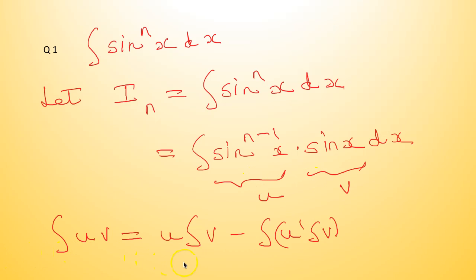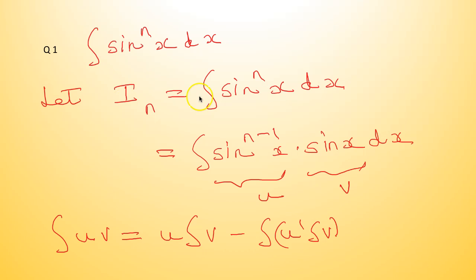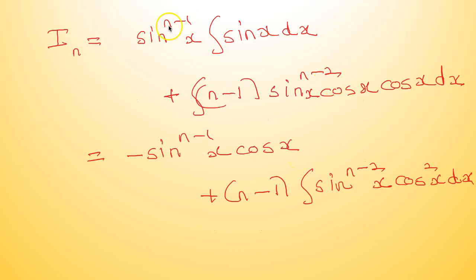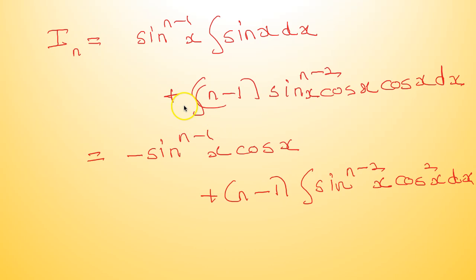Integral u·v is u·integral(v) minus integral of derivative of u into integral(v). So this will be sin raised to nx; integral of sin x is cos x; derivative of sin raised to (n−1)x is (n−1)·sin raised to (n−2)x; derivative of sin x is cos x; and integral of sin x is minus cos x, so the minus gives you a plus here.